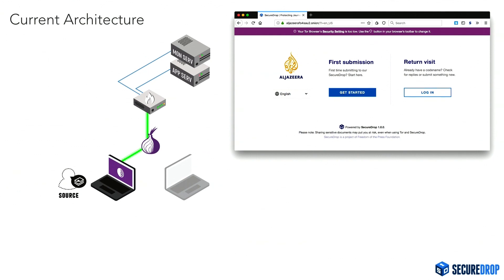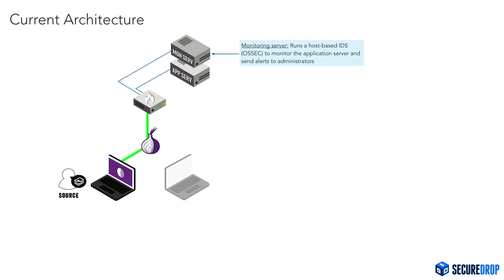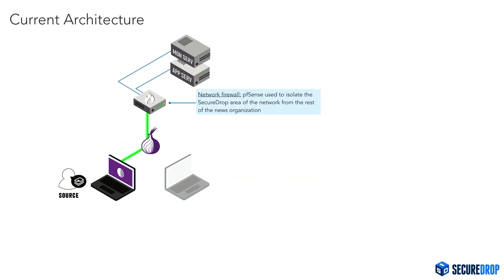This is what the web app that sources use looks like. If they want to upload something for the first time, they click Get Started. If they're a returning source, they can read messages that journalists have left them, and people do have long-running conversations through this. The other server runs a host-based IDS, OSSEC, which sends alerts to administrators — meaning IT staff at the news organization. There's also a network firewall that segments the SecureDrop part of the network from the rest of the infrastructure.